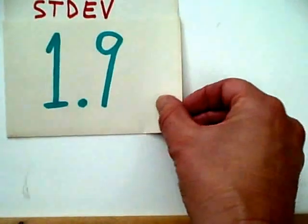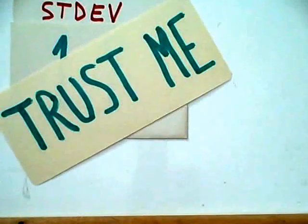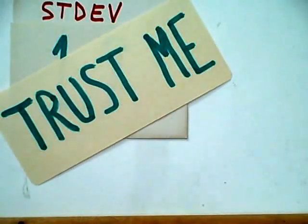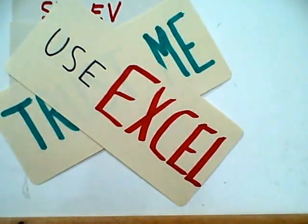So, we have our answer. We know what our standard deviation is. In this case, 1.9. We followed the formula. But, I want you to trust me on one other thing when it comes to calculating standard deviation in the real world. And, that is, don't use the formula. Use Excel, SPSS, Statcato, or some other spreadsheet program. It's just a lot easier.